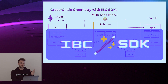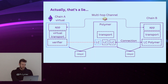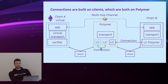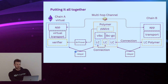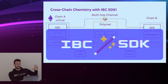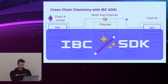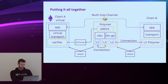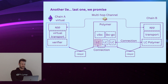For those who know more about IBC, let's address the two white lies. First: I showed a connection being built between chain A and Polymer — that's technically not true. The connection is actually local on Polymer, because Polymer is keeping track of the state on behalf of chain A, which is virtual. We just need to prove things and they will be verified on chain A, but the heavy lifting is being done on Polymer. From the perspective of the DApp developer, it's just regular chain A and chain B, and you send packets over the multi-hop channel.